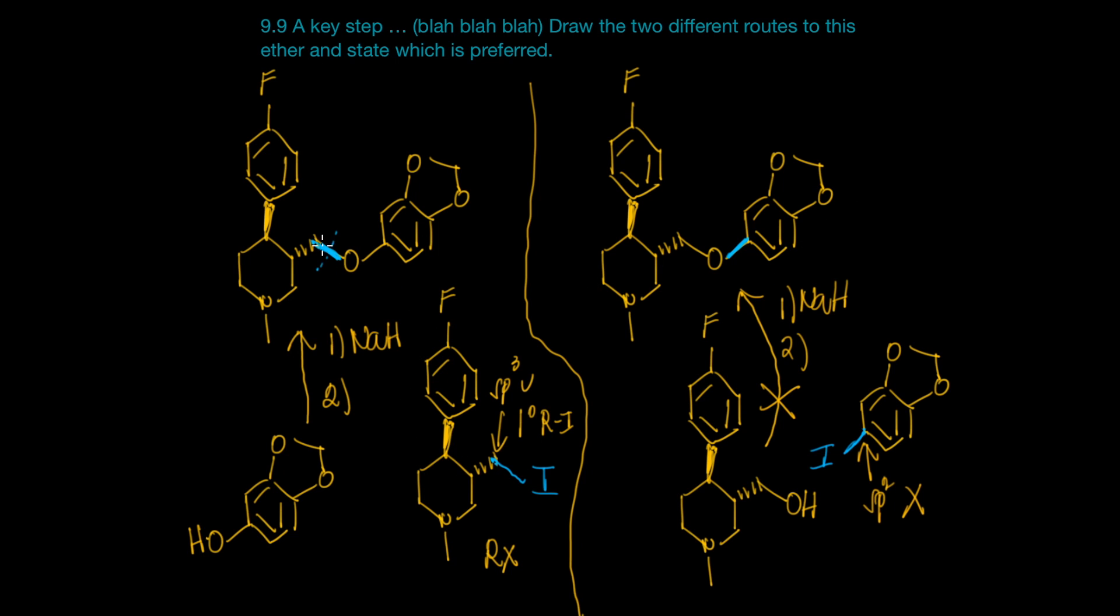It would never occur. So the only way we could create this ether is by creating this left bond from this alcohol and this alkyl halide. Thanks for watching.